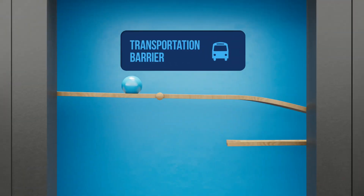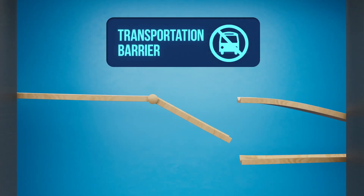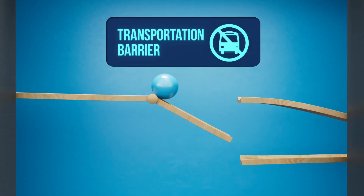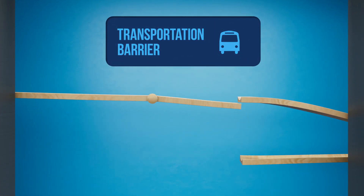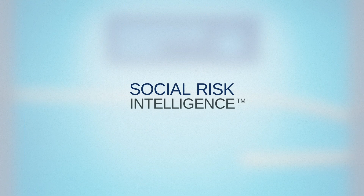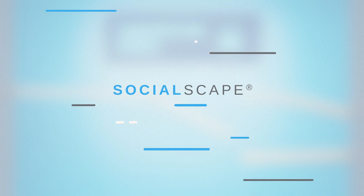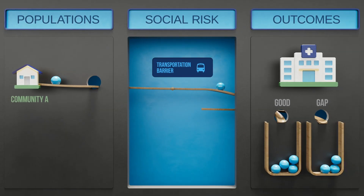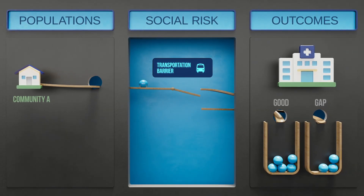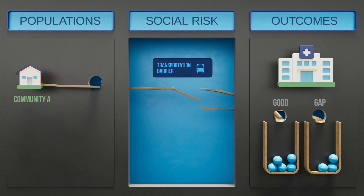To get a clear picture of social risk and how it's influencing the communities you serve, you need social risk intelligence. That's why Socially Determined created SocialScape, so that organizations could understand and quantify the impact of the social determinants of health and be empowered to drive action through insights.